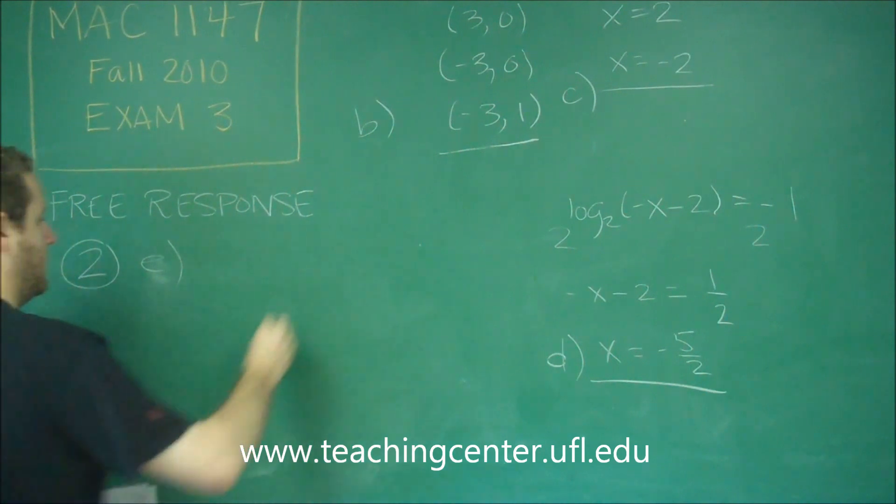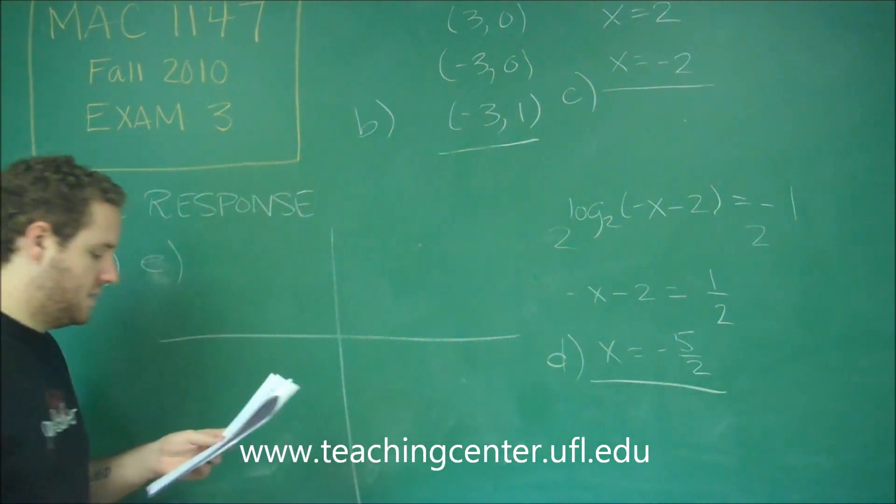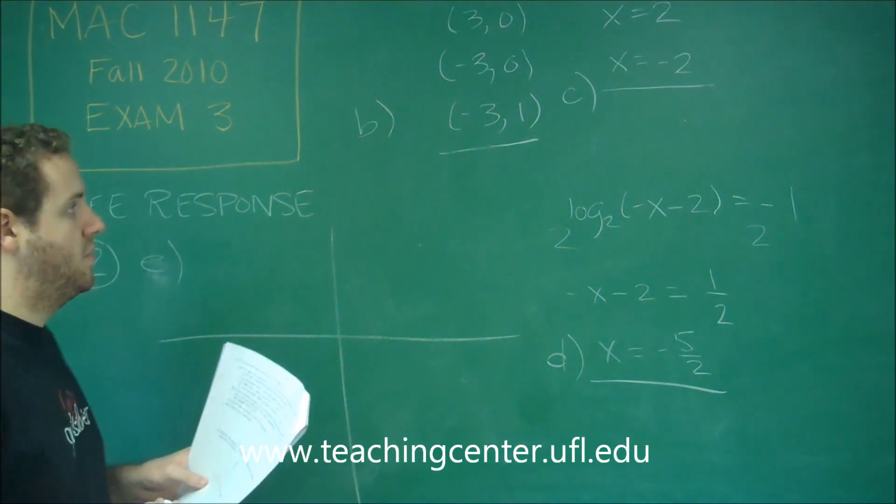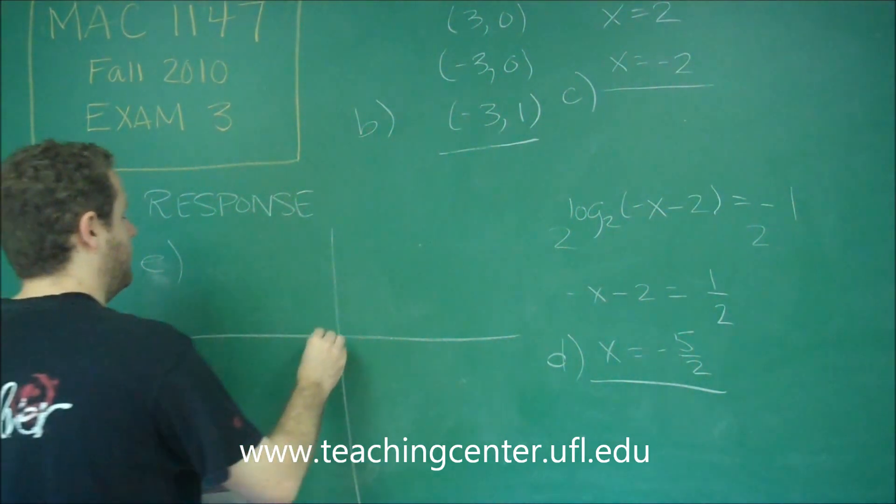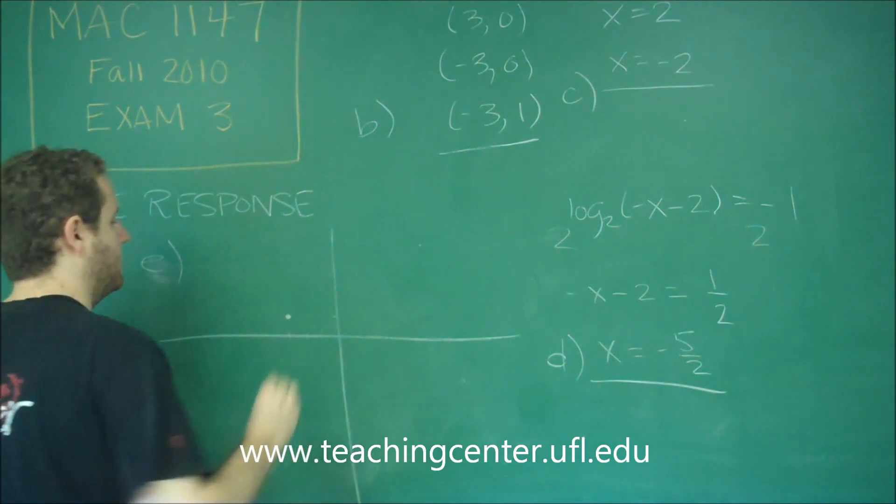Or the letter e. So here's our axes. So what we want to do is plot all of this information on here right away. We know that the point negative 3, 1 is on the graph for sure.